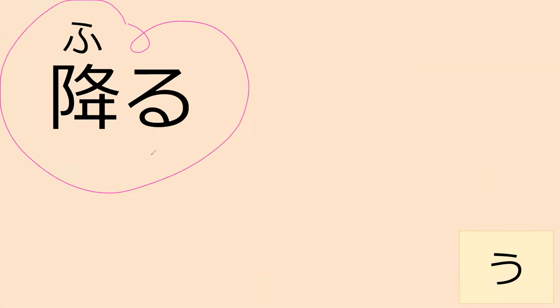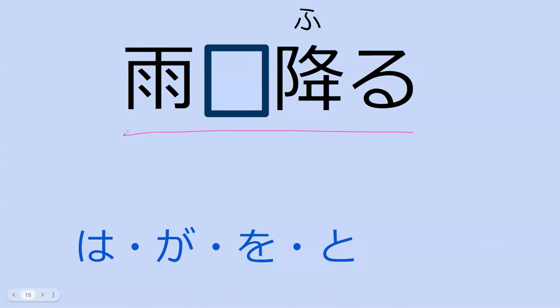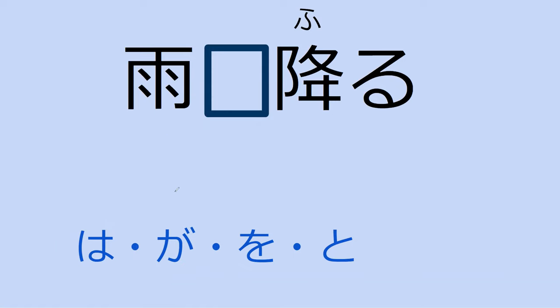Do you know what this word is? It's a pretty common kanji — ame, yes. Ame means rain. Now we have an u-verb — can you read it? It's furu. Do you know what furu means? It's related to ame. To fall — specifically to fall down, and yes we use it for rain. If we want to say rain falls down, what particle do you think it's going to use — wa, ga, o, or to?